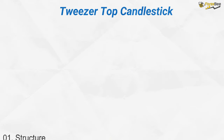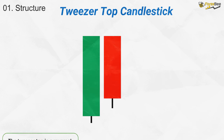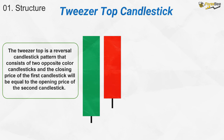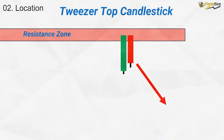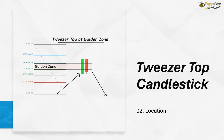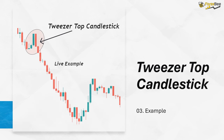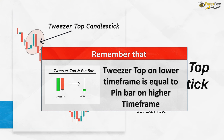Let's now discuss the tweezer top candlestick pattern. This is a two-candle formation where the first candle is bullish, followed by a bearish second candle. A key aspect is that the closing price of the first candle and the opening price of the second are nearly the same. Additionally, the second candle should close below the 50% mark of the first bullish candle. As a reversal pattern, the tweezer top typically forms at a resistance or supply zone. It's also worth noting that on a smaller time frame, a tweezer top is often equivalent to a pin bar on a higher time frame.